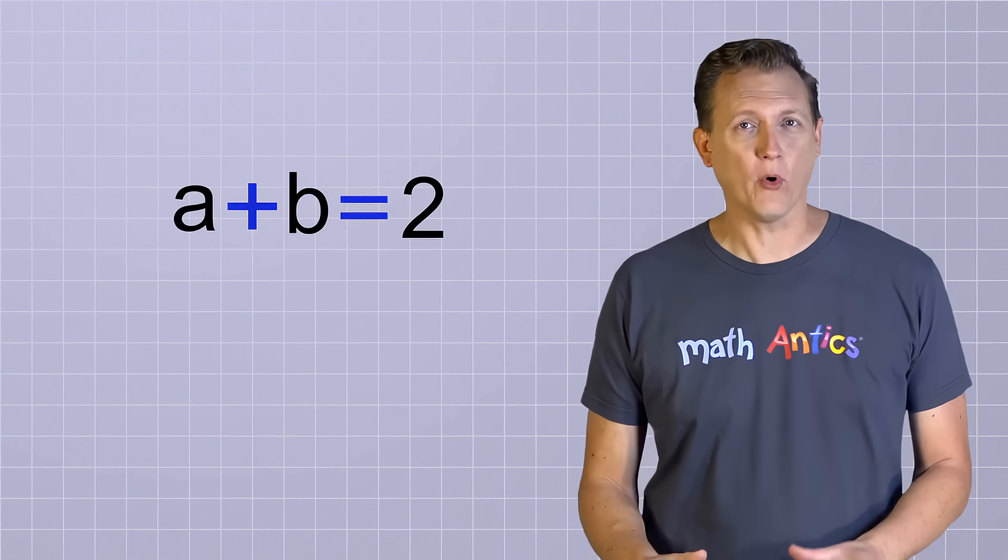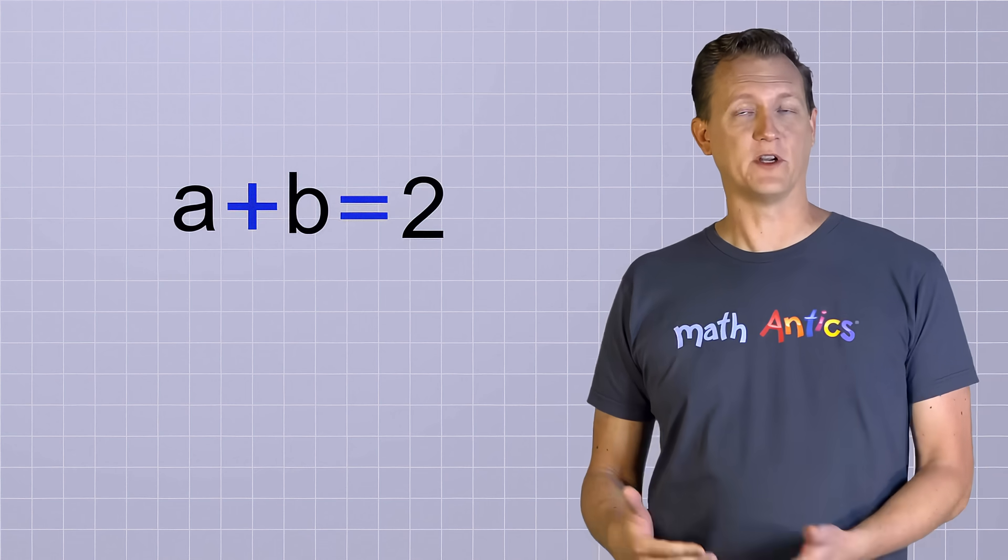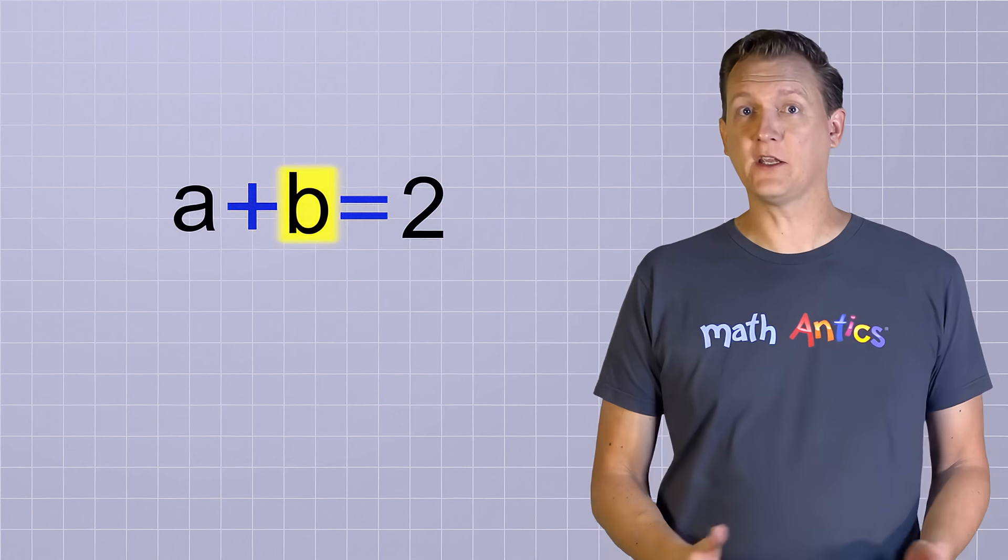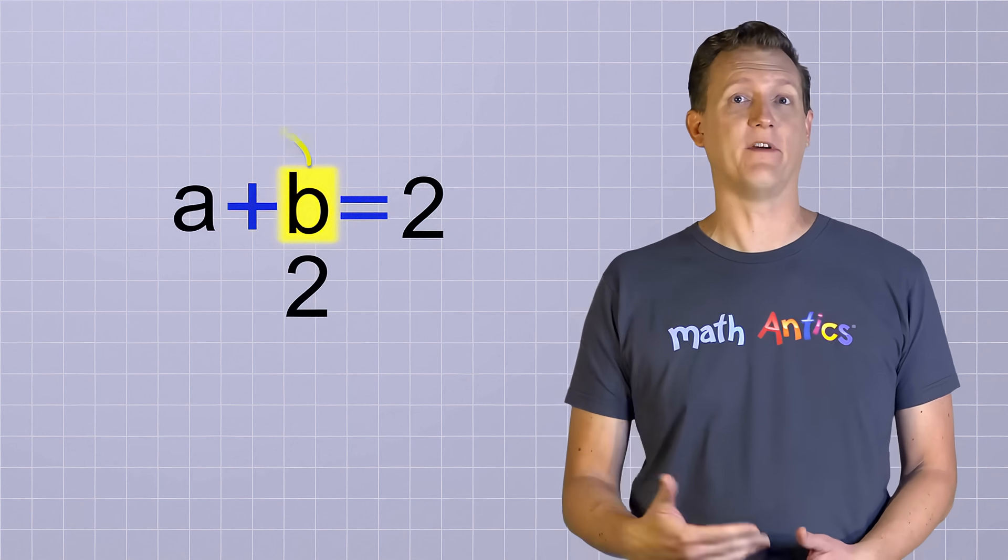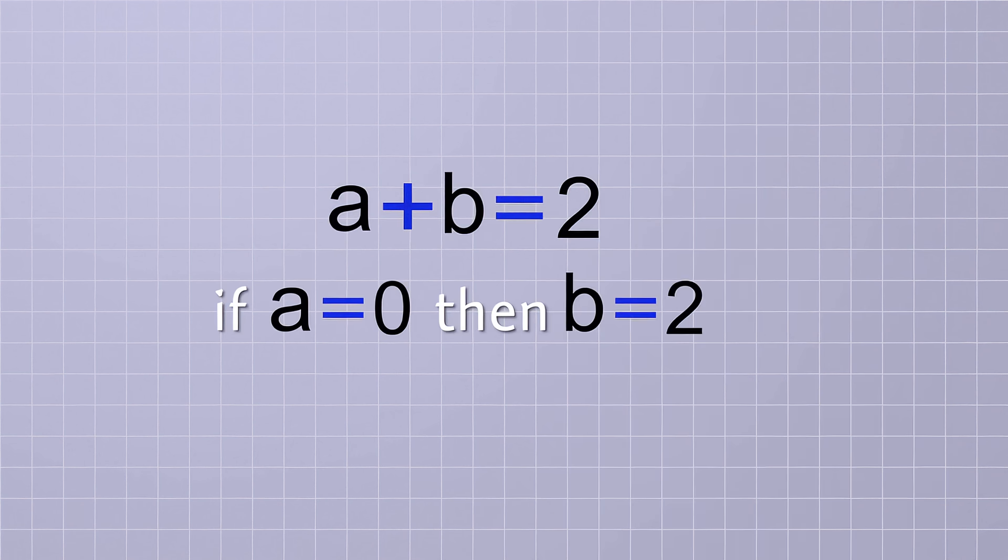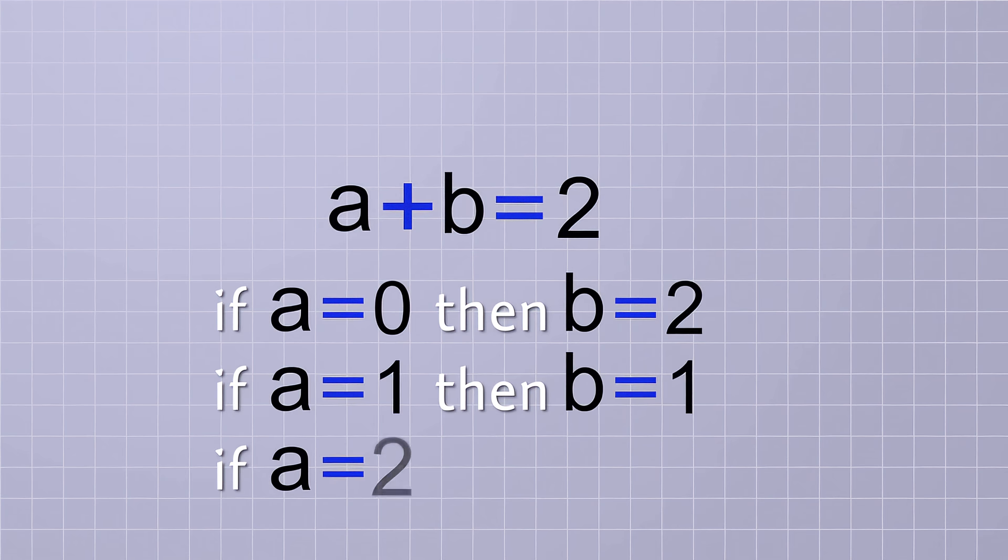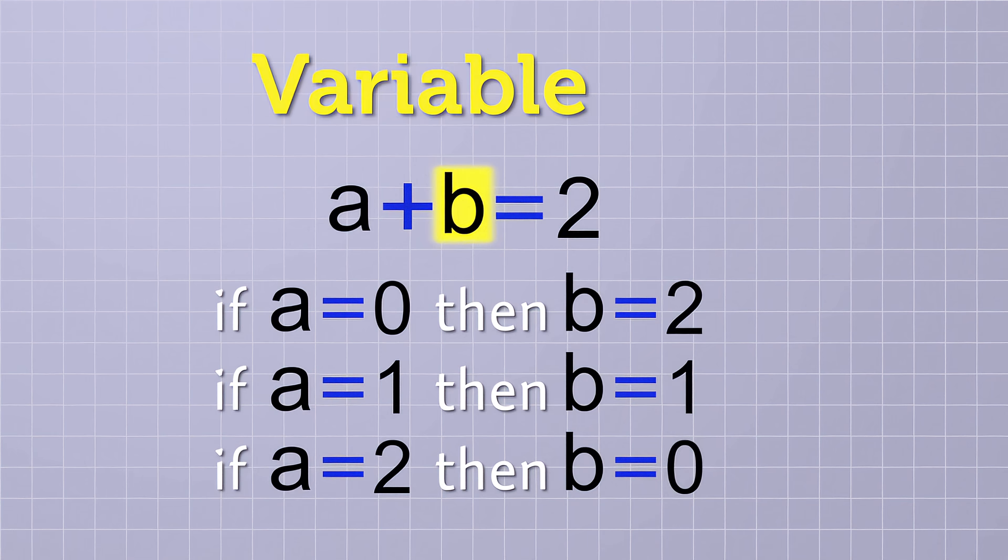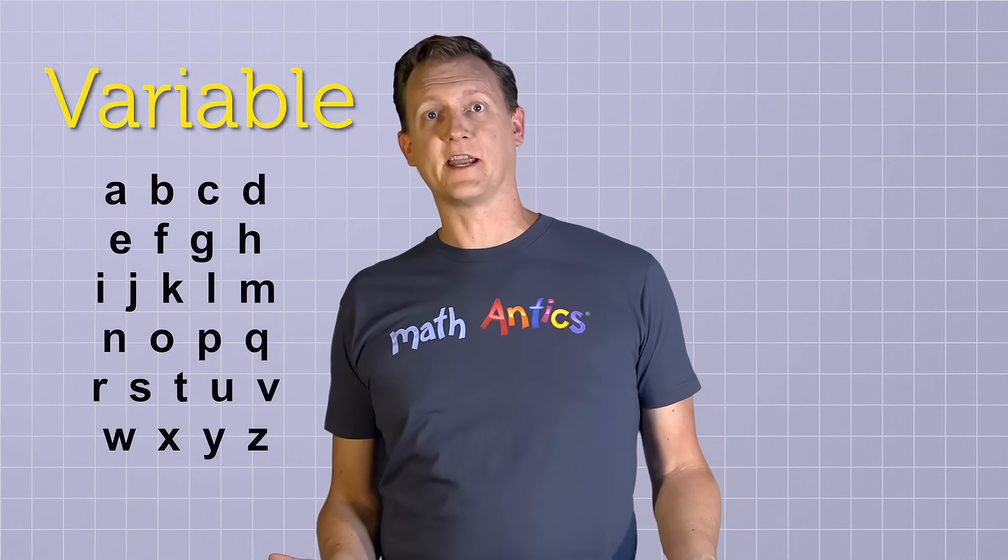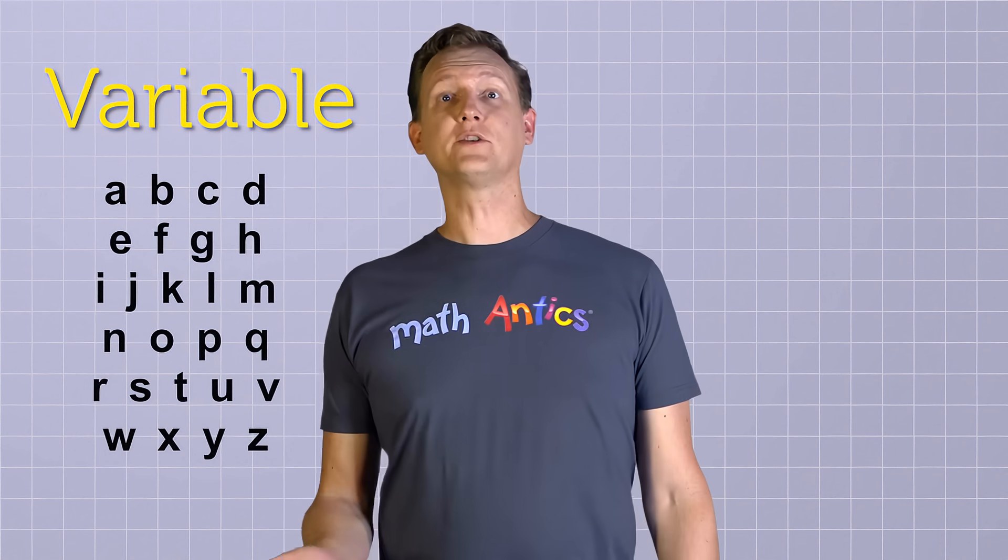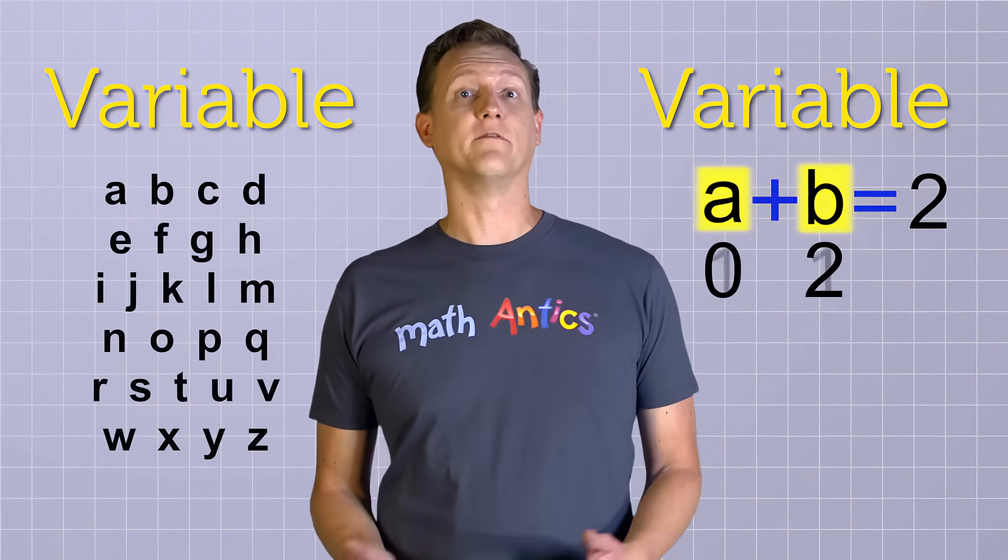Oh, and this problem can help us understand something very important about how symbols are used in algebra. Did you notice that there were different possible solutions for this equation? In other words, b could have the value 0, 1, or 2 depending on what the value of a was. If a is 0, then b must be 2. If a is 1, then b must be 1. And if a is 2, then b must be 0. b can't have two different values at the same time, but its value can change over time if the value of a changes. In algebra, b is what's called a variable because its value can vary or change. In fact, in this equation, both a and b are variables because their values will change depending on the value of each other. Actually, it's really common in algebra to refer to any letter as a variable since letters can stand for different values in different problems. But at Math Antics, we'll usually just use the word variable when we're talking about values that can change or vary in the same problem.